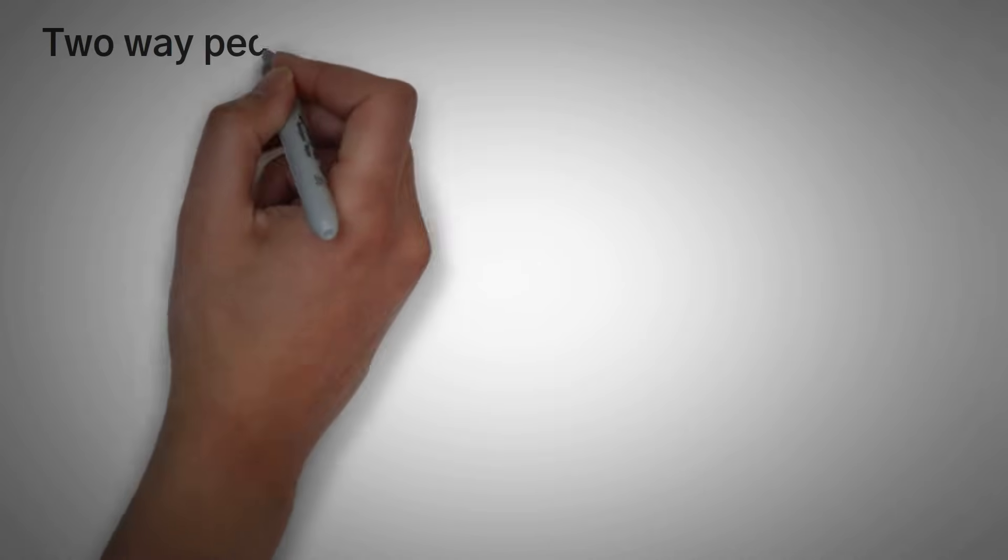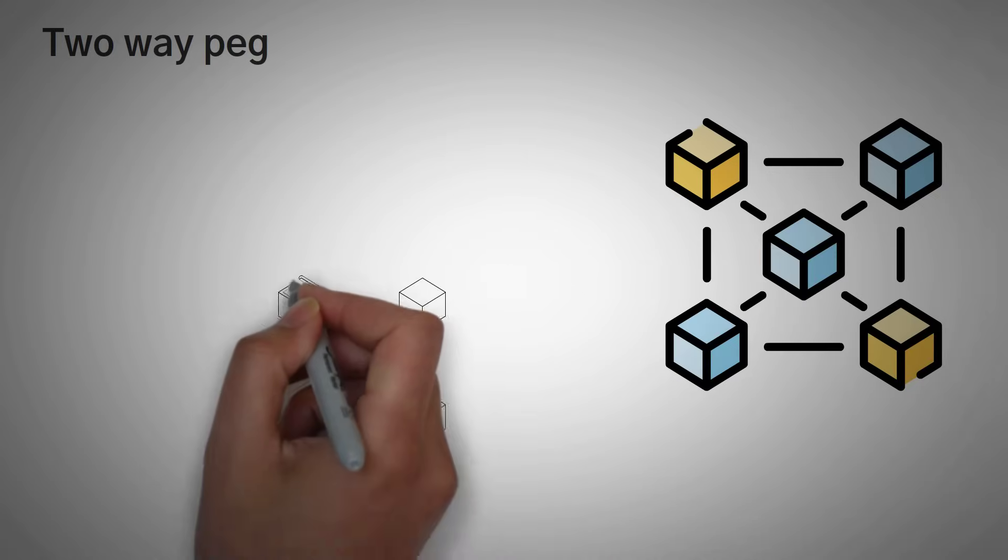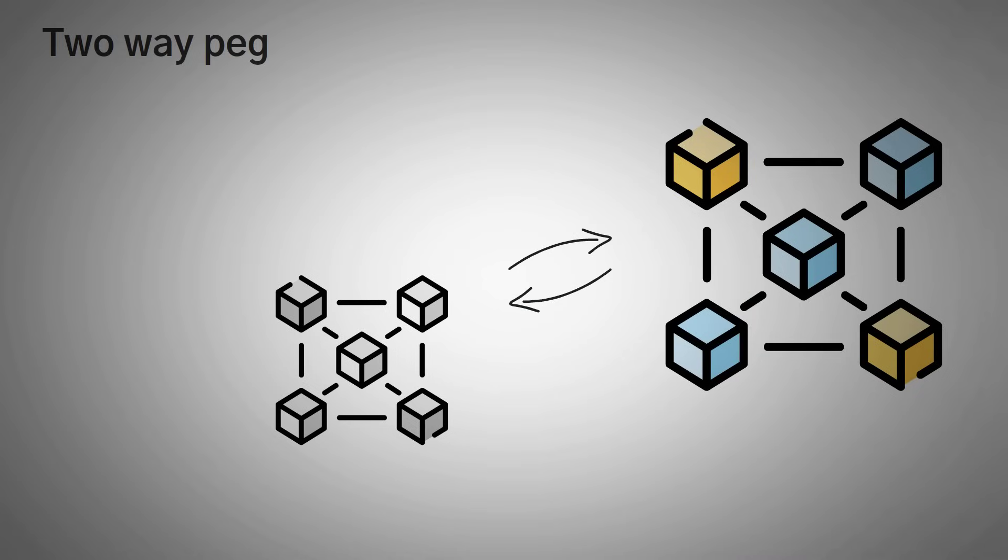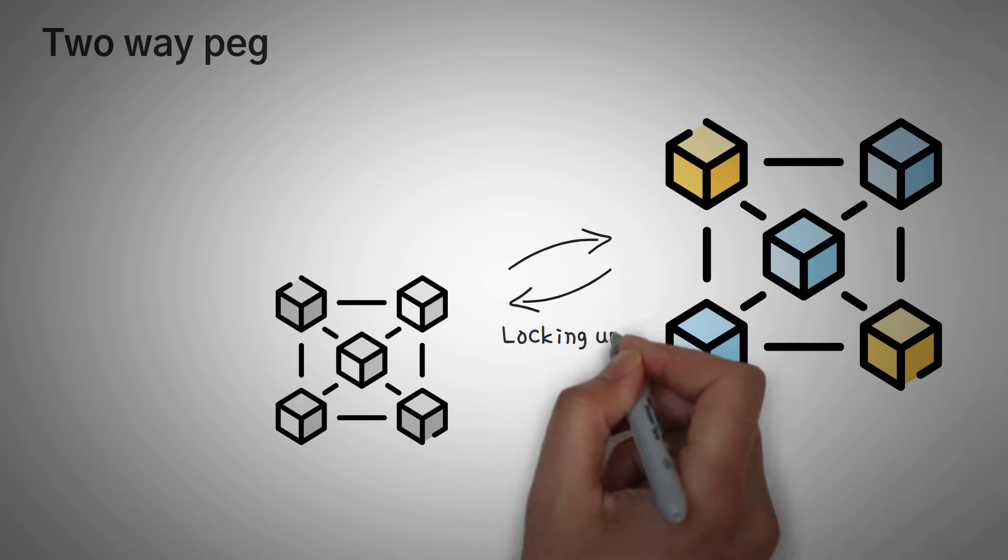Now the next big point of this video is to explain the two-way peg. They call it a two-way peg because they are pegged moving onto the sidechain and then pegged moving back to the mainchain. We call these two processes locking up and releasing.